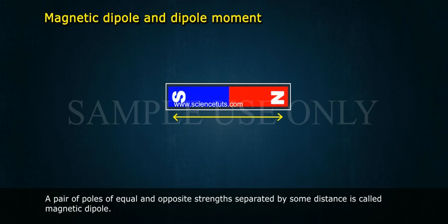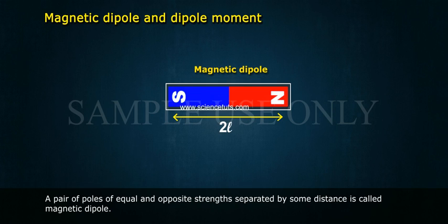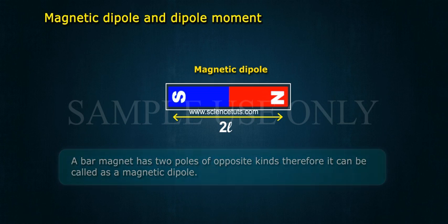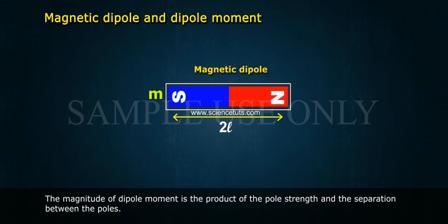Magnetic dipole and dipole moment. A pair of poles of equal and opposite strengths separated by some distance is called a magnetic dipole. A bar magnet has two poles of opposite kinds; therefore, it can be called a magnetic dipole. The magnitude of dipole moment is the product of the pole strength and the separation between the poles.